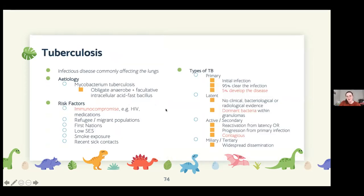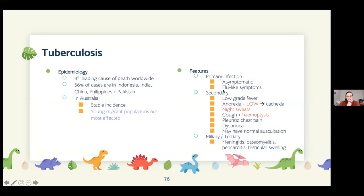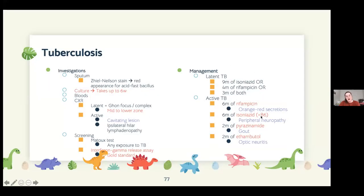Tuberculosis should be kept in mind for children as well. During the primary stage there are few symptoms; secondary TB presents with the classic triad of weight loss, night sweats, and haemoptysis. Eliciting these symptoms in a pediatric history requires adaptation. Treatment is the same as adults: rifampicin, isoniazid, pyrazinamide, and ethambutol.